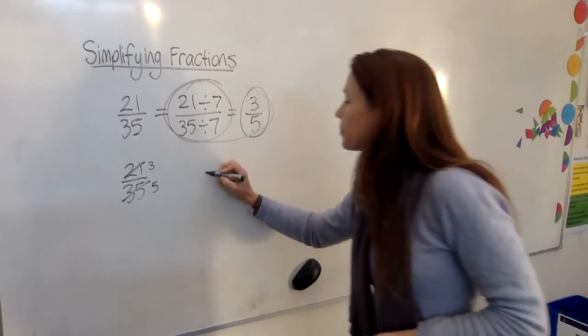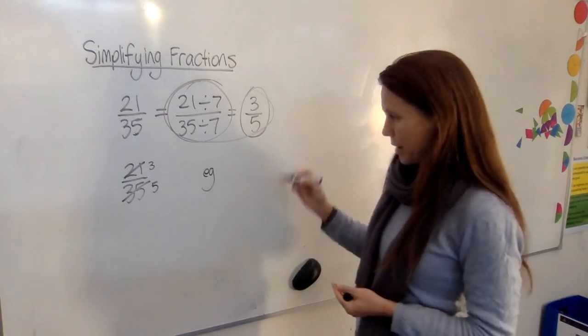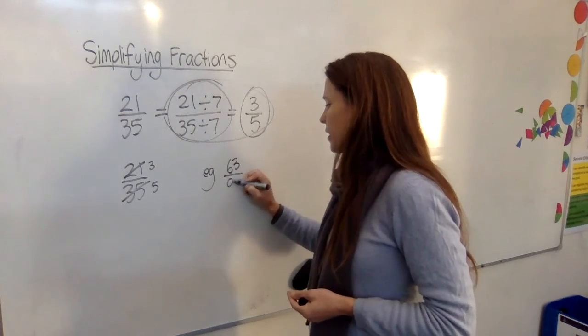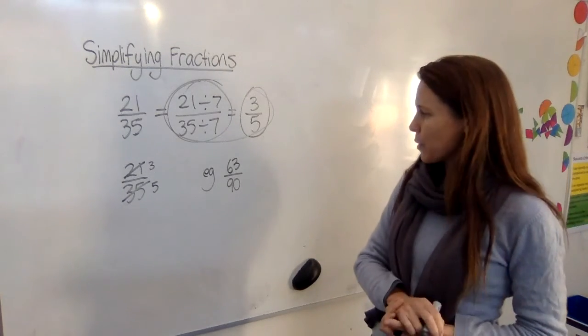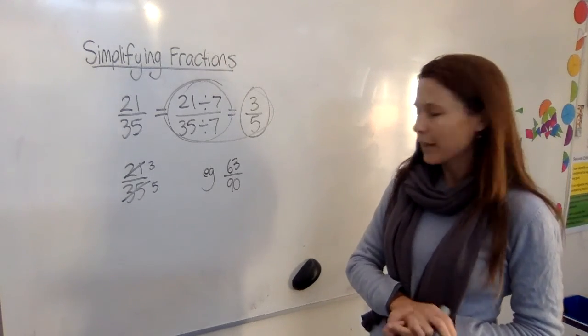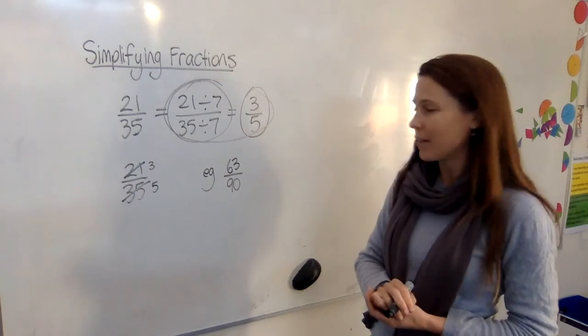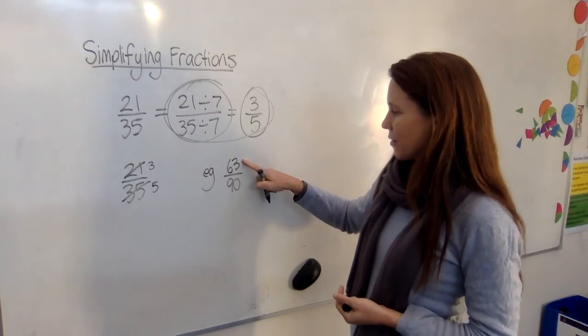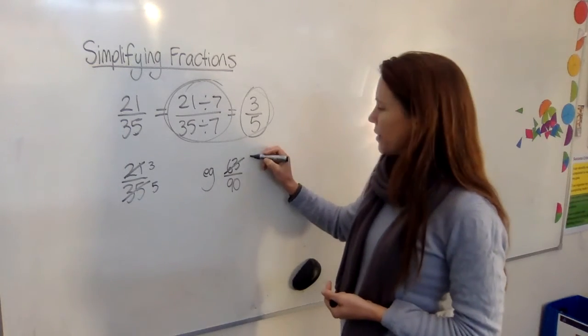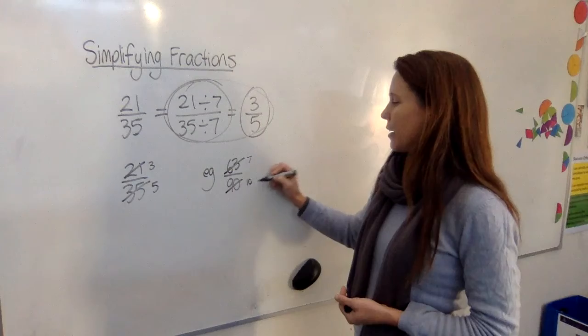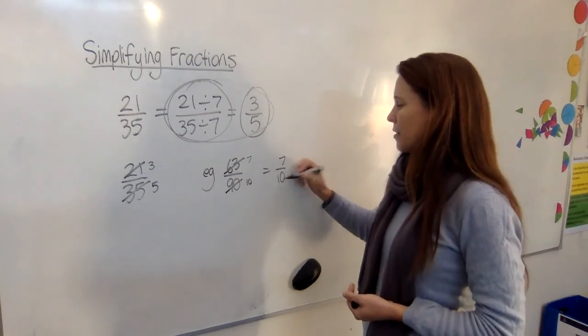Let's have a go at another one and we'll do it the cancelling way. Let's do 63 90ths. All right, what times tables are they both in? Oh, I can spot they're both in the 9 times tables, aren't they? Okay, this one is 7 9s and this one is 10 9s. So I'm going to divide this one by 9 and divide this one by 9 and I get 7 10ths.